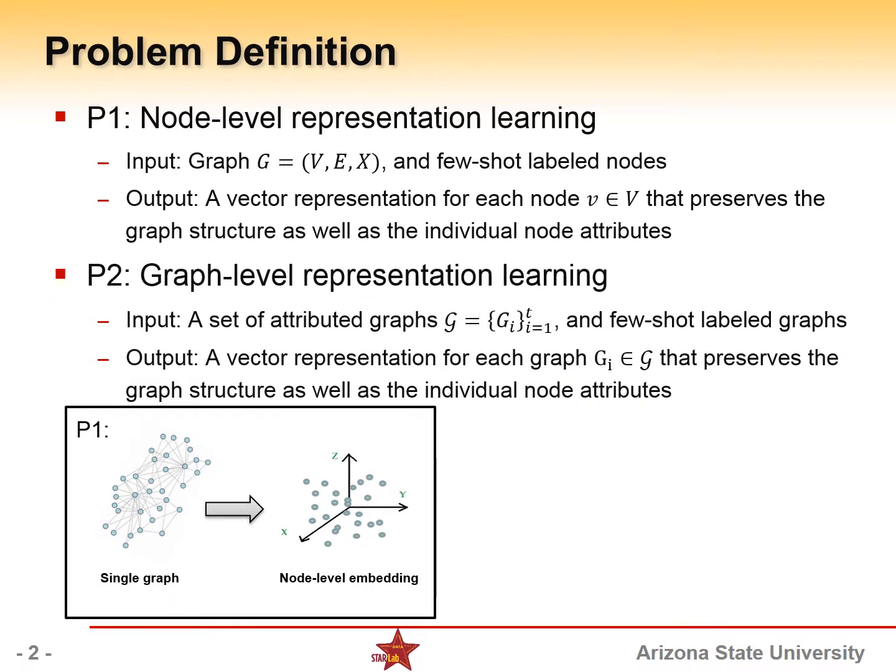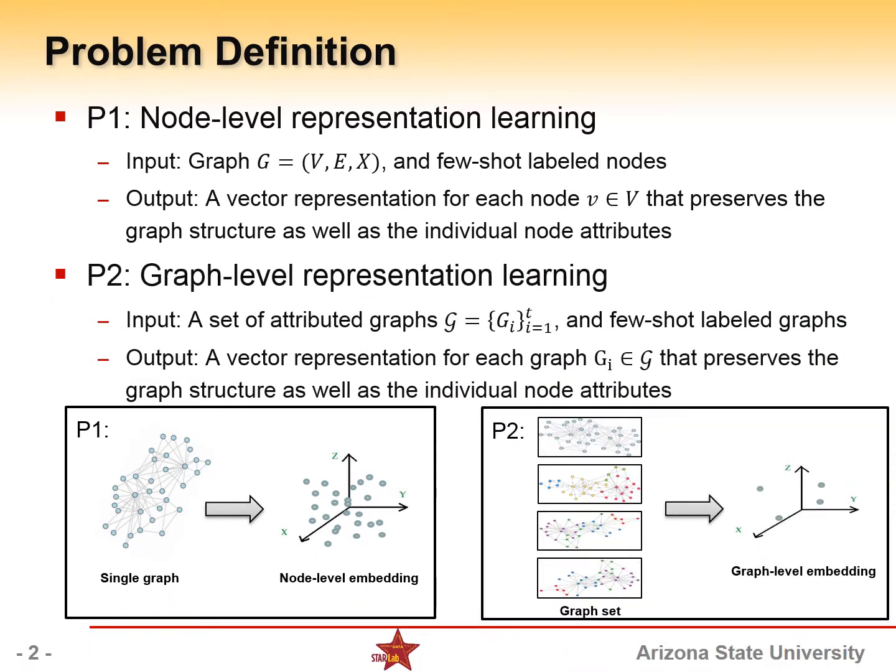While graph-level representation learning learns the representation for the entire graph that preserves both the graph structure and individual node attributes.